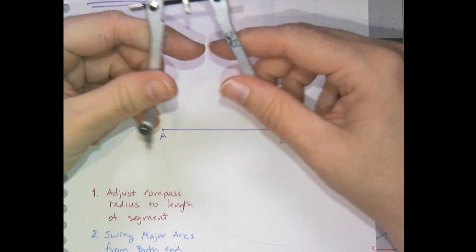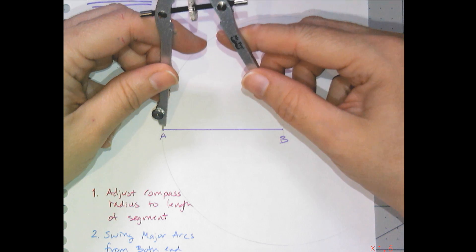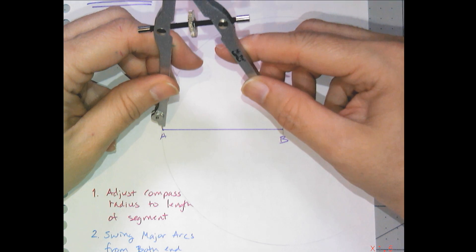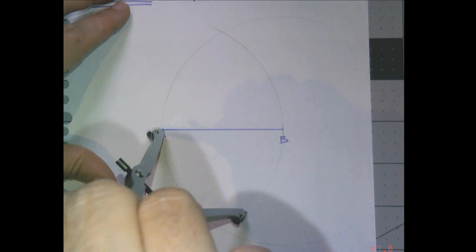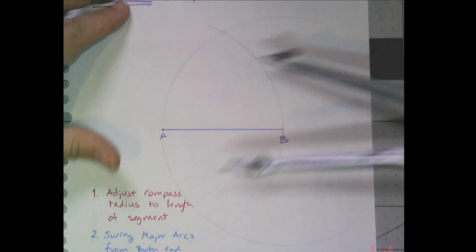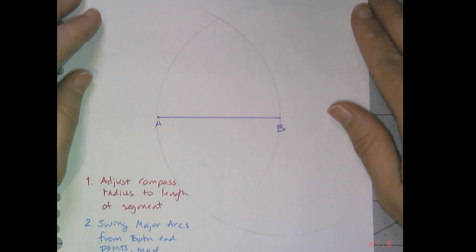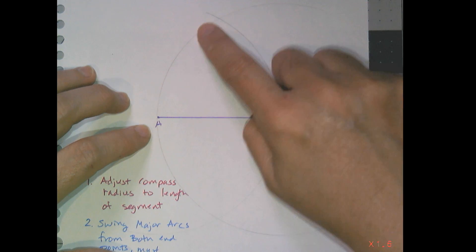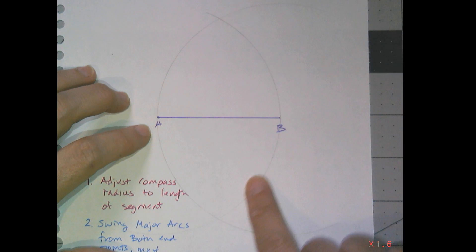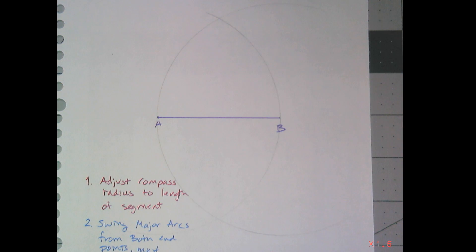And then I'm going to switch where the point is. I'm going to move the point to the other endpoint of that line segment, and I'm going to swing another giant arc, semi-circle size. I'm sorry this is really light, but you should see my construction marks. It looks like parts of two circles that are intersecting, and that's really what it is.